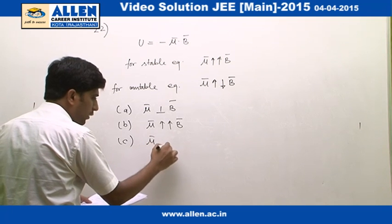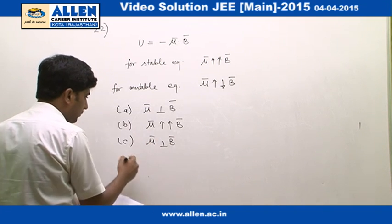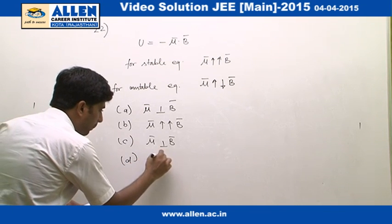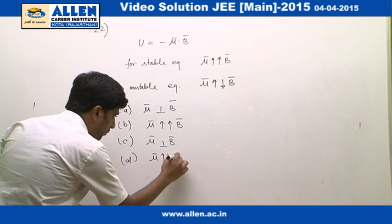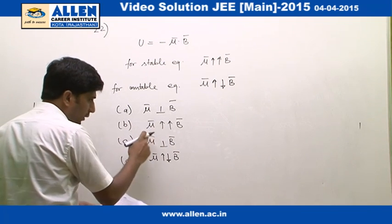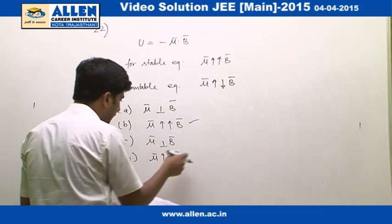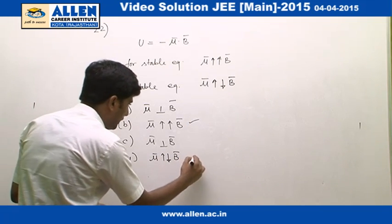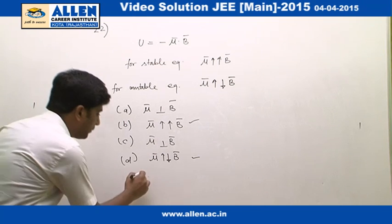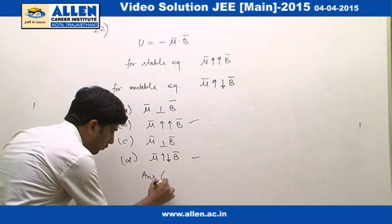In option C, mu is perpendicular to the vector B, and in option D, mu is opposite to the vector B. Therefore for stable equilibrium option B is correct and for unstable equilibrium option D is correct. Therefore the most appropriate answer is 1.